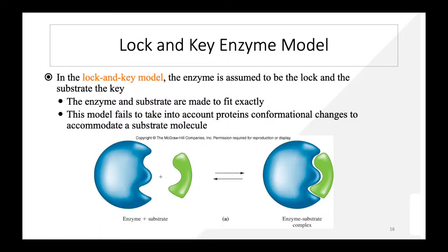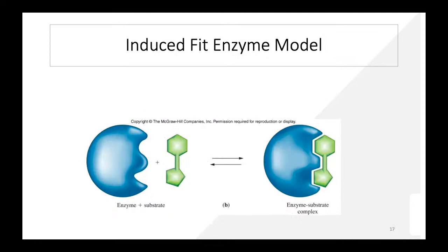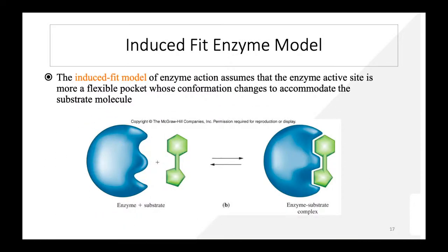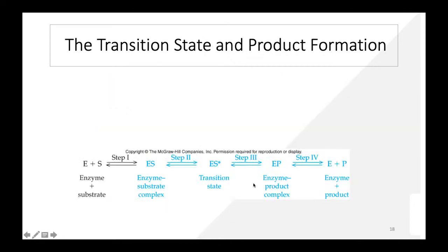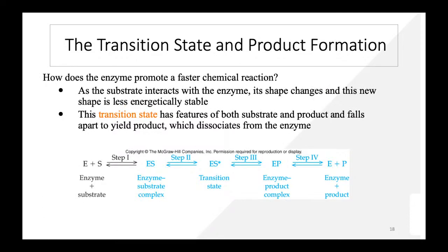In the lock-and-key model, the enzyme's active site is rigid — the substrate fits exactly, and there is no conformational change in the enzyme. In the induced fit model, the active site is flexible and conformational changes occur to accommodate the substrate molecule — the enzyme shape can change from one form to another according to the substrate. During the transition state, the substrate's shape changes, becoming less energetically stable, and then falls apart to yield products that dissociate from the enzyme.